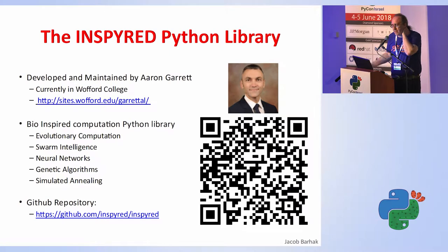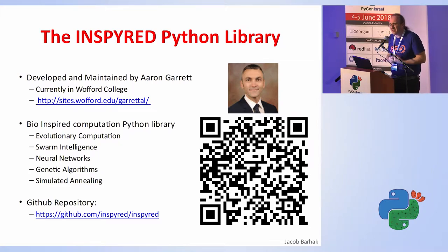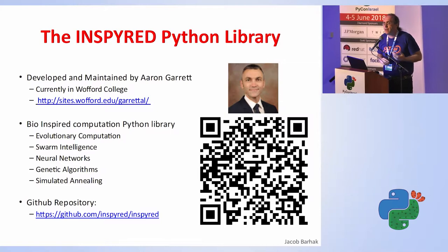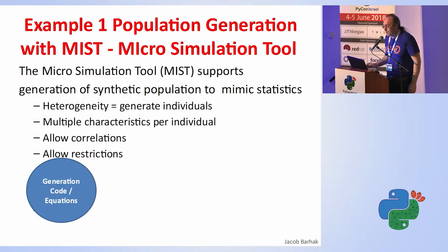This is Aaron Garrett. He wrote Inspyred. I've been working with him for several years over email. Inspyred has several other examples, including swarm intelligence, neural networks, and genetic algorithms, which are a subset of evolutionary computation. It also includes simulated annealing. You can say those are all kinds of random optimization techniques in that library, though you don't necessarily have to make them random.